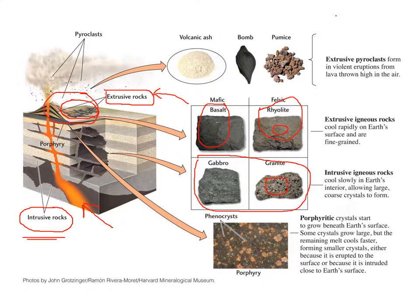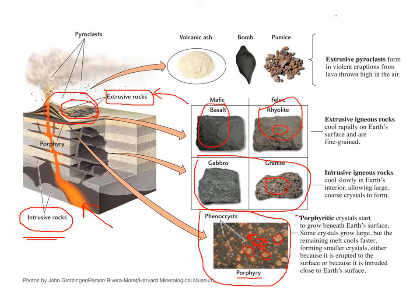We also have porphyritic texture — some large crystals embedded in a matrix without large crystals. This happens when a rock starts to cool slowly, forming some crystals, then gets ejected out of a volcano or intruded close to the surface and cools more rapidly. So you have large crystals in a fine-grained matrix — that's called porphyry or porphyritic texture.